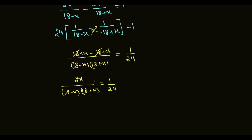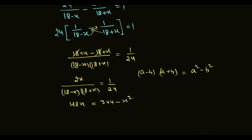Taking 24 to the other side by multiplying: 48x equals (18 minus x)(18 plus x). Applying the identity (a minus b)(a plus b) equals a squared minus b squared, we get: 48x equals 18 squared minus x squared, which is 324 minus x squared.